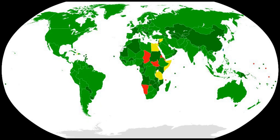Review conferences, other than the fifth, adopted additional understandings or agreements that have interpreted, defined or elaborated the meaning or scope of a BWC provision, or that have provided instructions, guidelines or recommendations on how a provision should be implemented. These additional understandings are contained in the final declarations of the review conferences. There has been an increase in the percentage of delegates from states parties who have been women since the first review conference, with just 7% in 1980 to 26% in 2011.